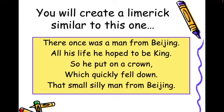Remember, limericks are humorous and should be light-hearted. There shouldn't be any unhappiness, terrible, or violent endings — just light-hearted, silly behavior. Notice once again: lines one, two, and five rhyme at the end, and lines three and four also rhyme at the end. Lines one, two, and five have three rhythmic beats, while lines three and four have only two rhythmic beats.